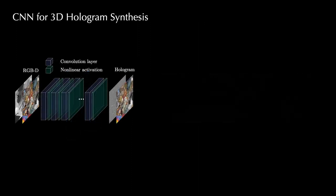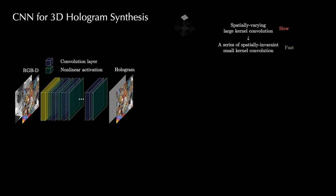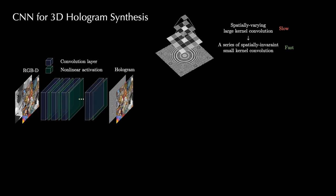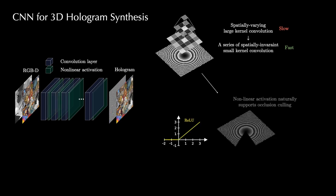To accelerate computation, we learn a convolutional neural network as a proxy of the physical simulation. The CNN learns a series of small and spatially invariant convolution kernels that progressively build different sub-holograms, which is orders of magnitude faster than explicitly constructing and convolving them. The non-linear activation, such as ReLU, also stops forward propagation of occluded wavefronts, thus naturally modeling occlusion.